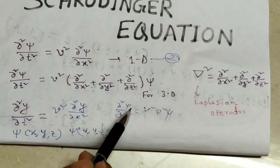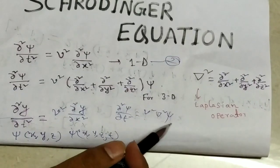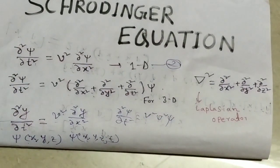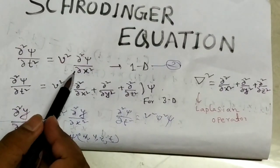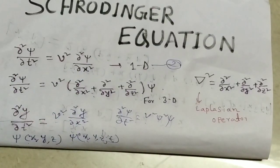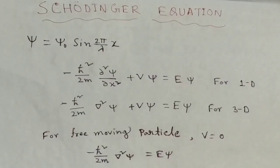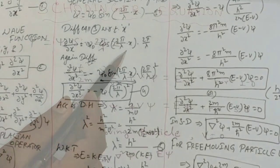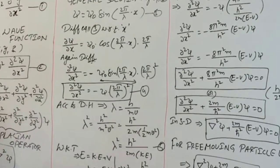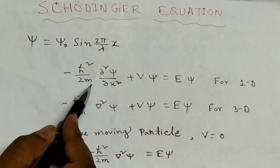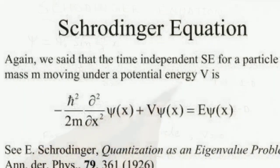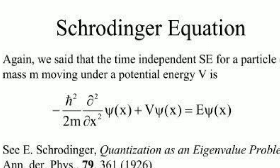We write the equation: del squared Psi / del t squared equals v squared times grad squared Psi. This is a second-order differential equation. Taking the general solution as Psi equals Psi-zero times sine(2π/λ · x), we can derive: minus h-bar squared / 2m times del squared Psi / del x squared plus V·Psi equals E·Psi, where V is the potential — this is the one-dimensional form.